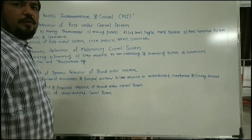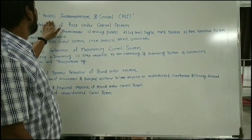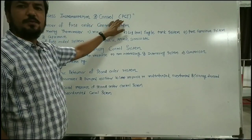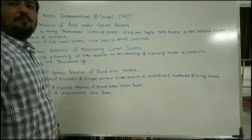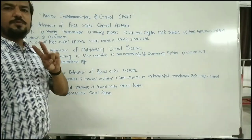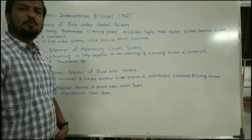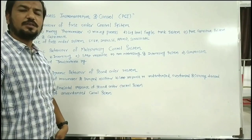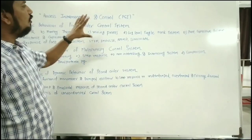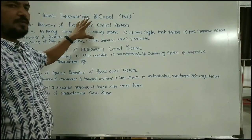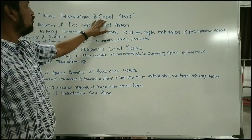Hello everyone. Today we will discuss the syllabus structure of the subject entitled Process Instrumentation and Control, popularly known as PCI. In Nagpur University, Amravati University, and Pune University, there are two subjects of control included in the BTE Chemical Engineering syllabus: first is Process Instrumentation and Control, or Process Control and Instrumentation, and next is Process Dynamics and Control. In some universities it is also called Process Control and Instrumentation.